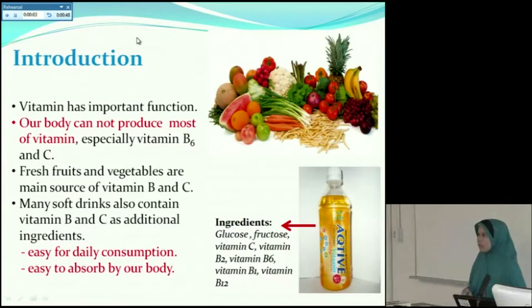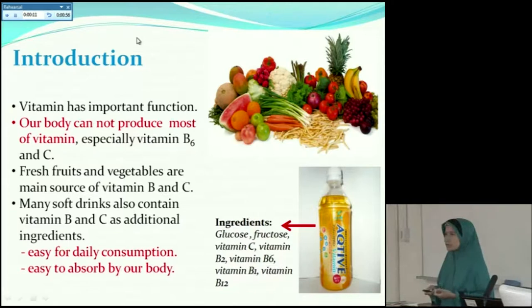Let's start with introduction. As we know, vitamin has important function for our health. Unfortunately, we cannot produce some vitamins, for example Vitamin B6 and Vitamin C, by ourselves. So we need other sources for vitamin intake, and fresh fruits and vegetables are main sources of Vitamin B and C. Many soft drinks also contain Vitamin B6 and Vitamin C as additional ingredients.